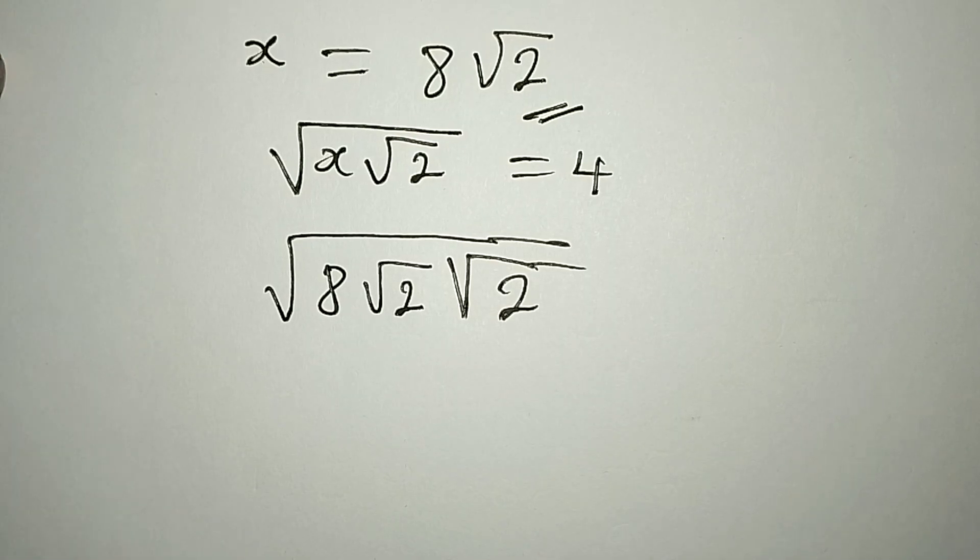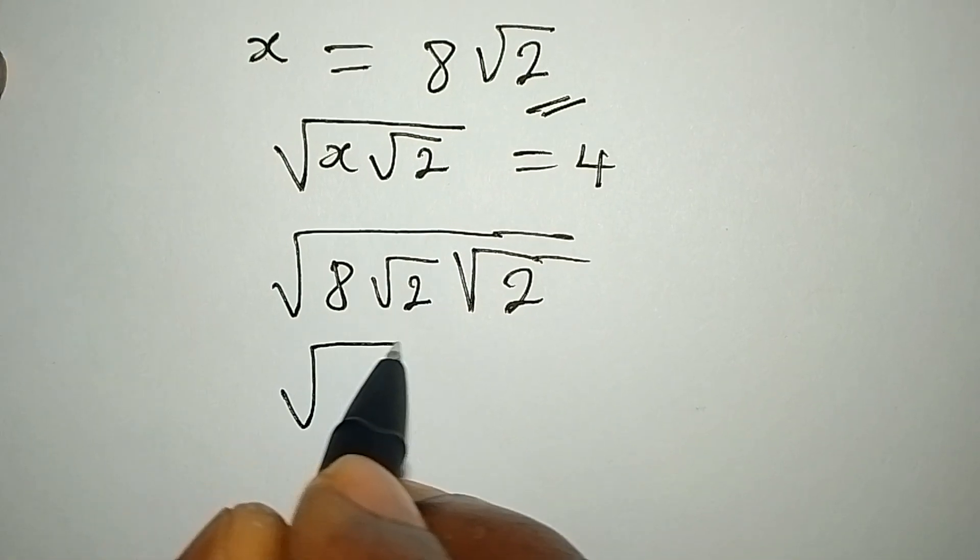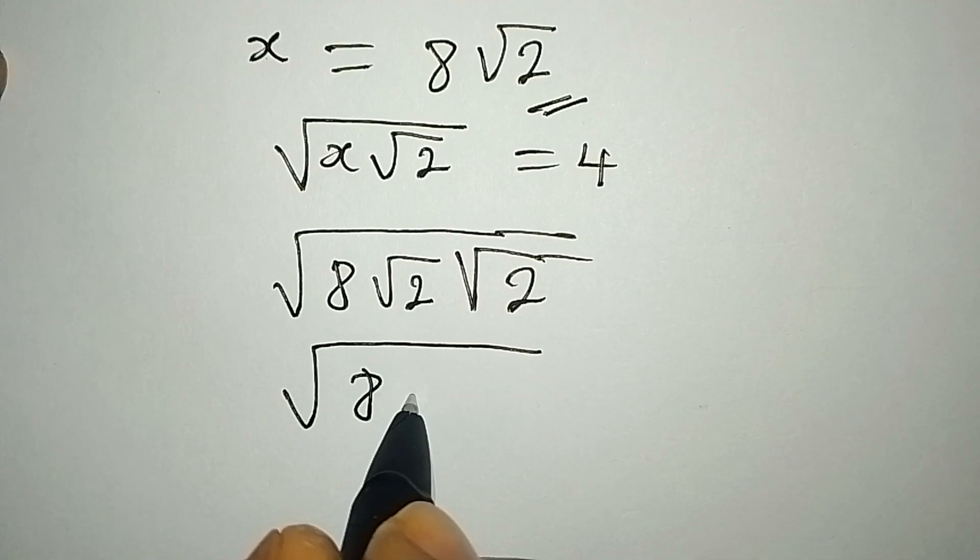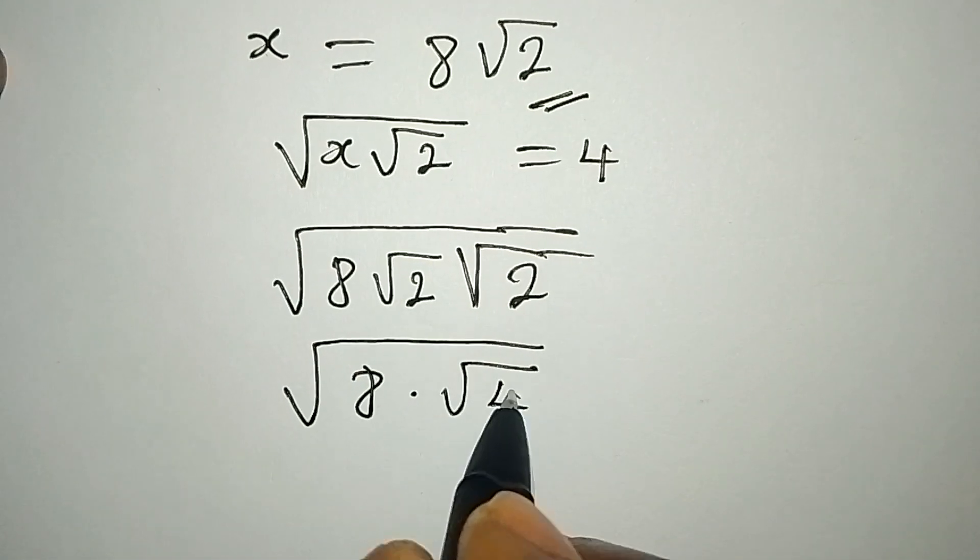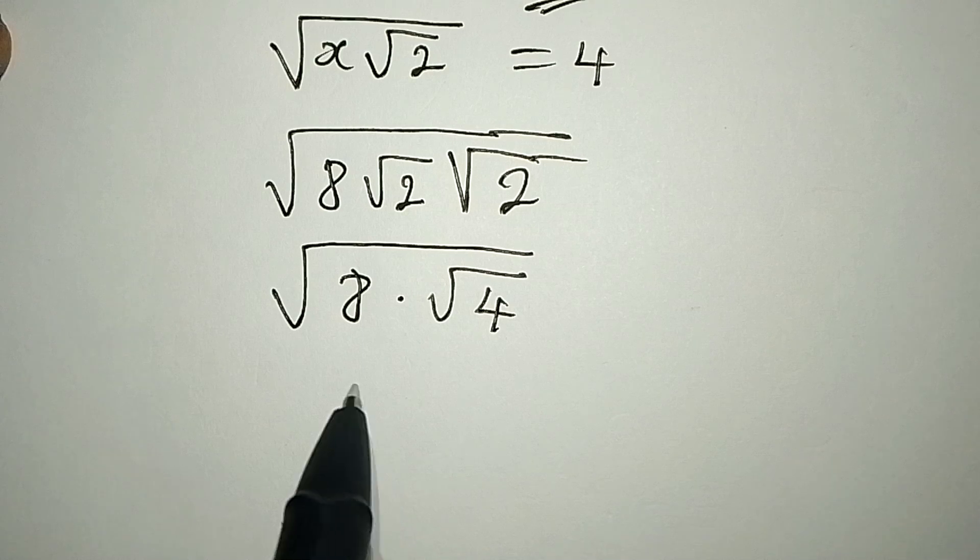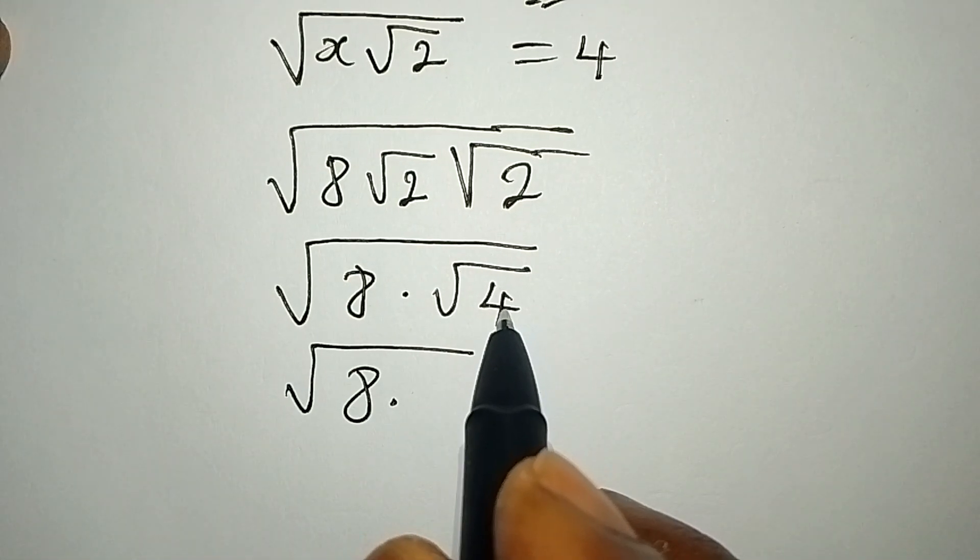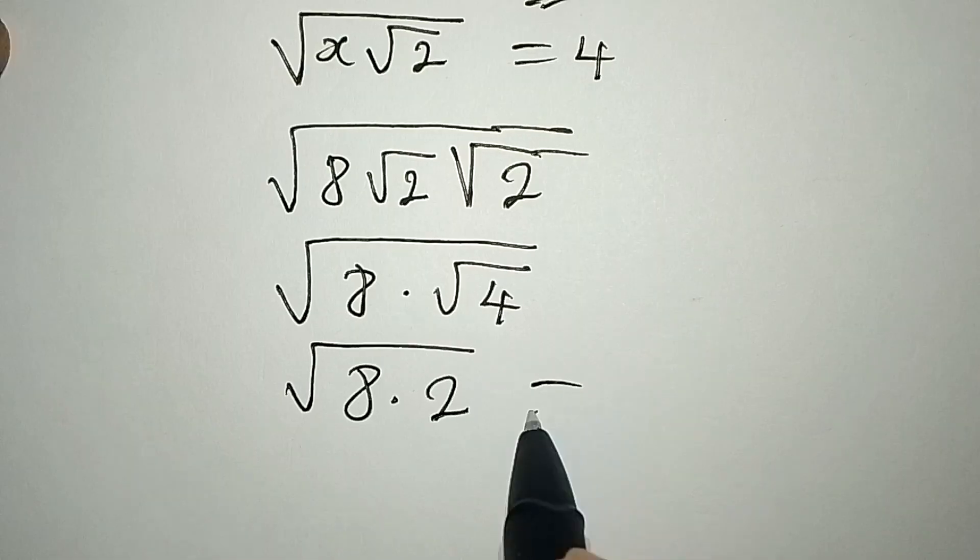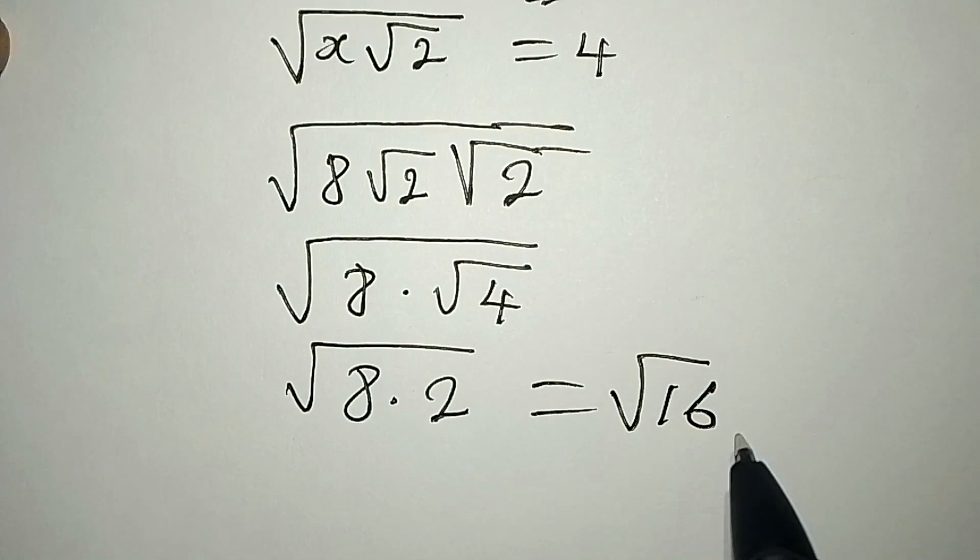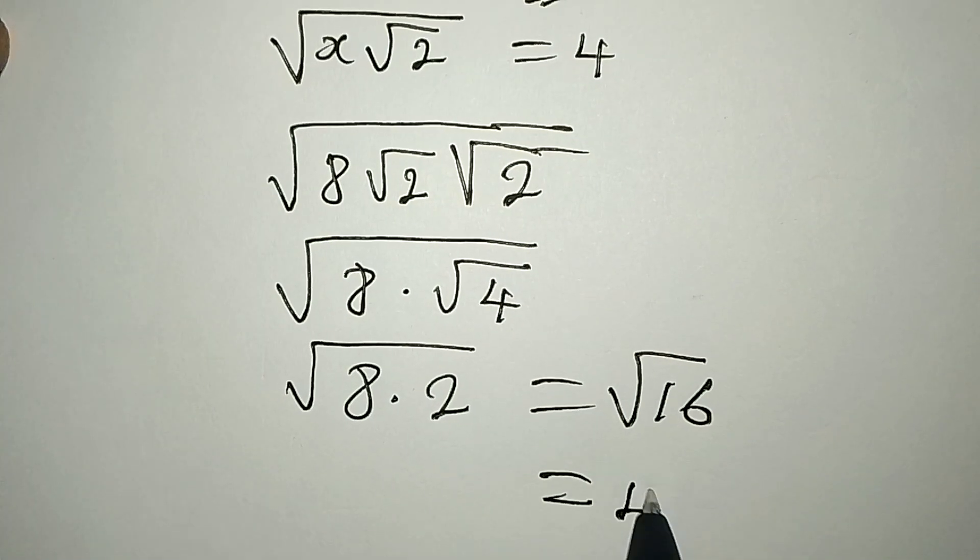It's simple. We can just have this as 8 multiplied by root 2 times root 2, which will give us root 4. Now we have square root of 8 multiplied by square root of 4 is 2. So this means that we're having square root of 16, and square root of 16 is 4.